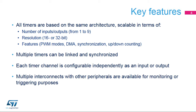All timers are based on the same architecture and are available in several derivatives. The timers mainly differ in the number of inputs and outputs they have, from a pure time base without any IOs to an advanced control version with 9 IOs. Most timers feature 16-bit counters, while some have 32-bit counters. Some features may not be present on the smallest timer derivatives, for example DMA, synchronization, and up-down counting modes.